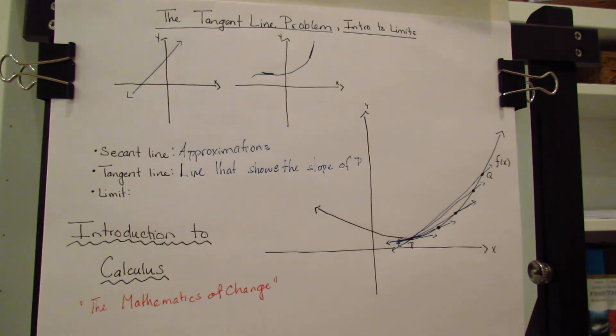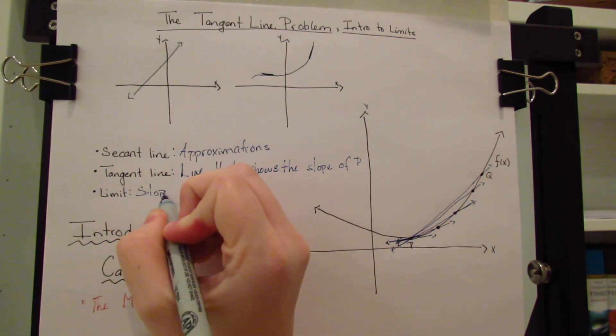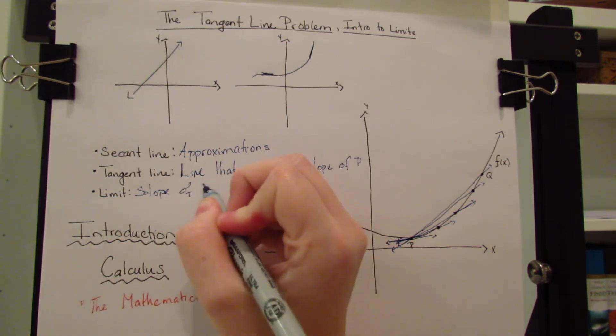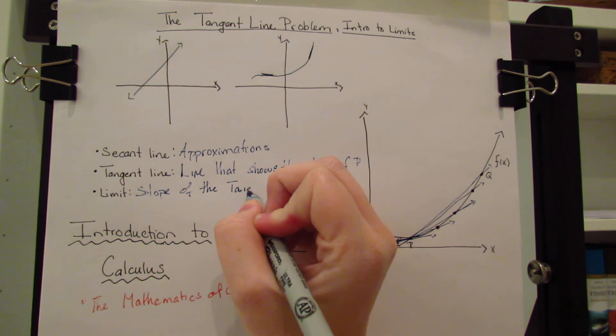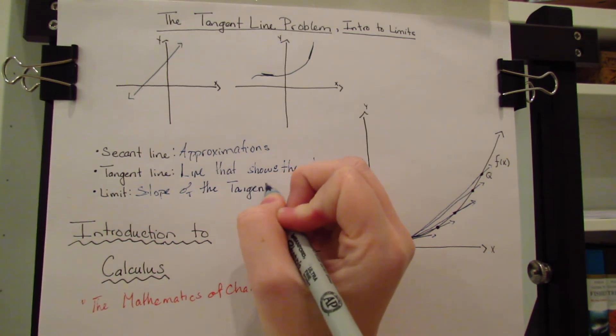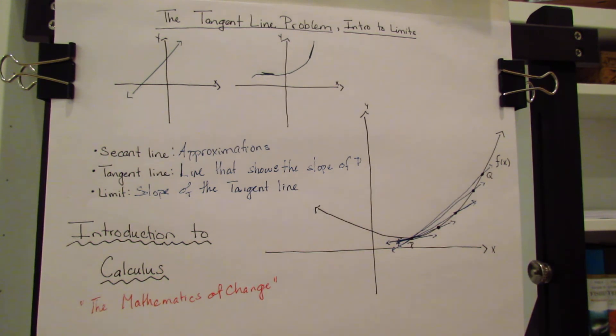Now, once you have the tangent line, if you find the slope of the tangent line, this is called a limit. So our limit is the slope of the tangent line.